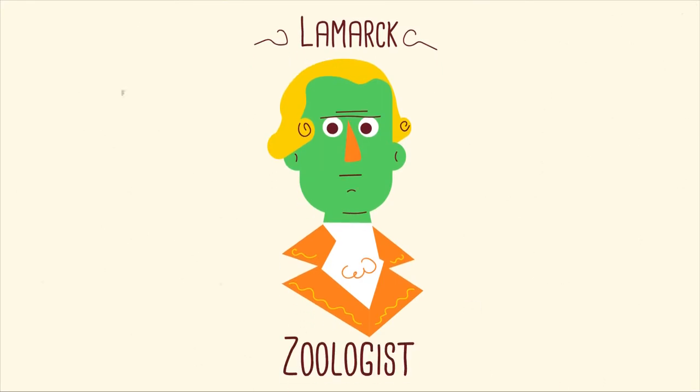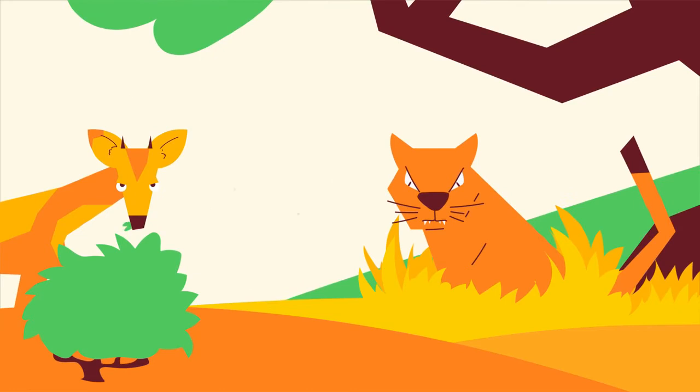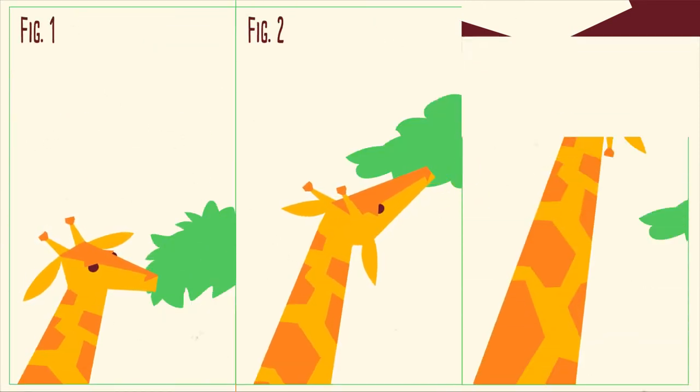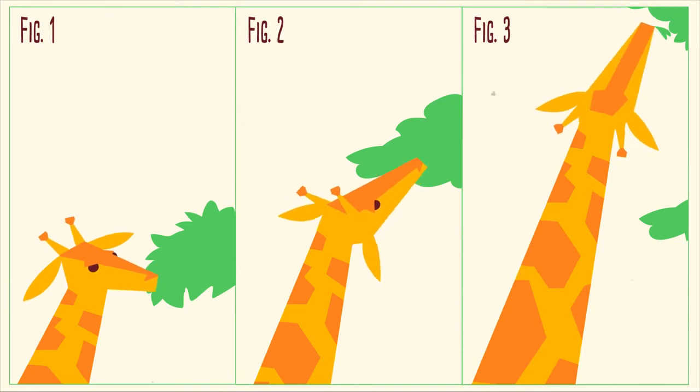Lamarck, a zoologist, noted that animals seemed very well suited to their environments and suspected that throughout their lifetimes, animals improved themselves. For example, a giraffe's long neck was thought to be the result of the animal's continual stretching in order to reach food that was higher and higher from the ground.